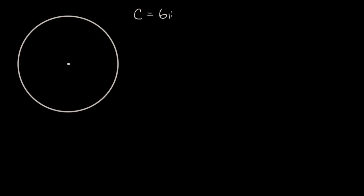So we have a circle here. Let's say that we know that its circumference is equal to six pi units, whatever our units happen to be. Let's see if we can figure out, given that its circumference is six pi of these units, what is the area going to be equal to? Pause this video and see if you can figure it out on your own.